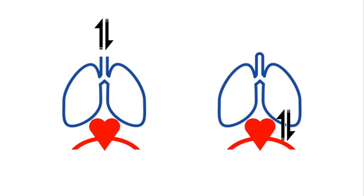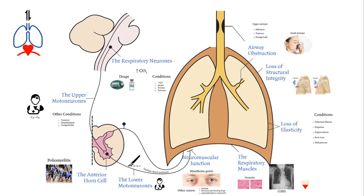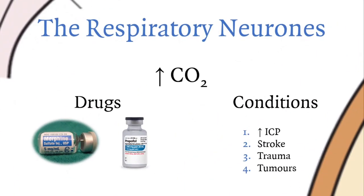Ventilation failure can stem from a variety of causes starting from the brain. You could have failure of the respiratory neurons due to hypercapnic coma, drugs like morphine or hypnotics, increased intracranial pressure, stroke, trauma, or tumors. Moving down, problems with upper motor neurons — mainly C3/C4 fractures causing phrenic nerve failure — lead to diaphragm failure and ventilation problems. Other causes include tumors, demyelination, and syringomyelia.